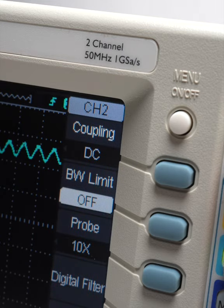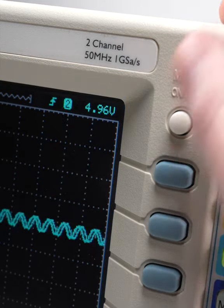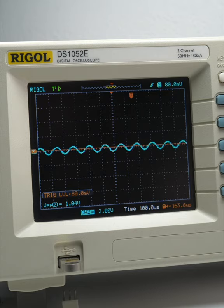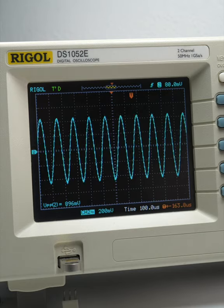By changing the scope's coupling setting, we can switch in a blocking capacitor which only allows the AC component to pass, so we can focus on that sine wave.